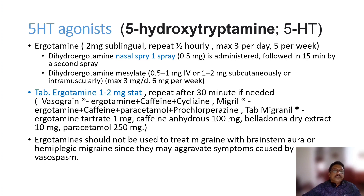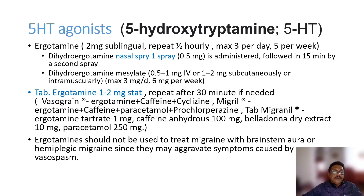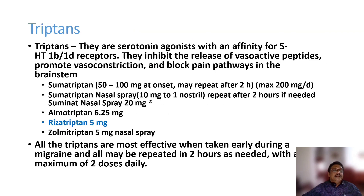5-HT agonists are important in migraine treatment. Ergotamine — a 5-hydroxytryptamine agonist — is available as tablet, nasal spray, or sublingual form, often combined with caffeine or cyclizine. The dose is 1–2 mg orally; nasal spray is 0.5 mg per spray. Subcutaneous injections are also available. However, avoid ergotamine if focal neurological findings or brainstem features are present, as it may aggravate vasospasm.